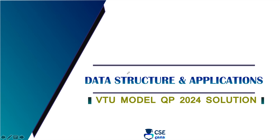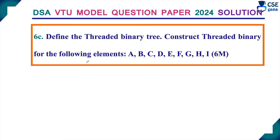Welcome to CSA Guru. In this session, we will discuss BSA BTU model question paper 2024 solution. Question number 6C: Define threaded binary tree. Construct threaded binary tree for the following elements. It is a 6-mark question.